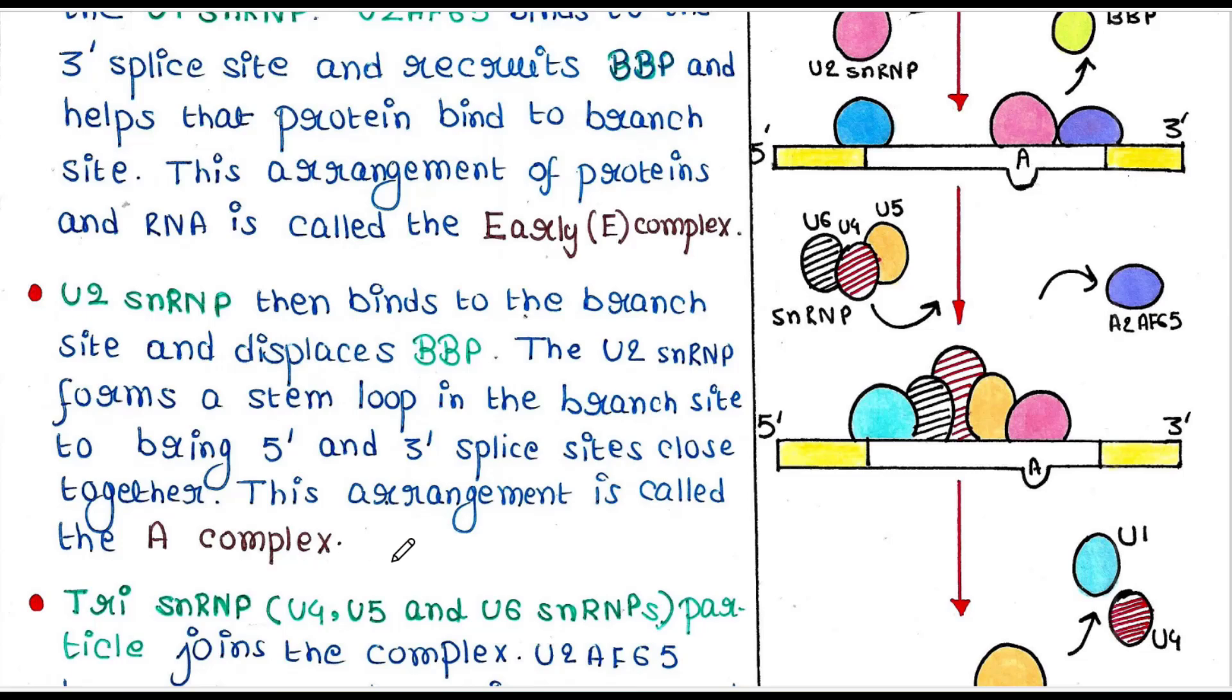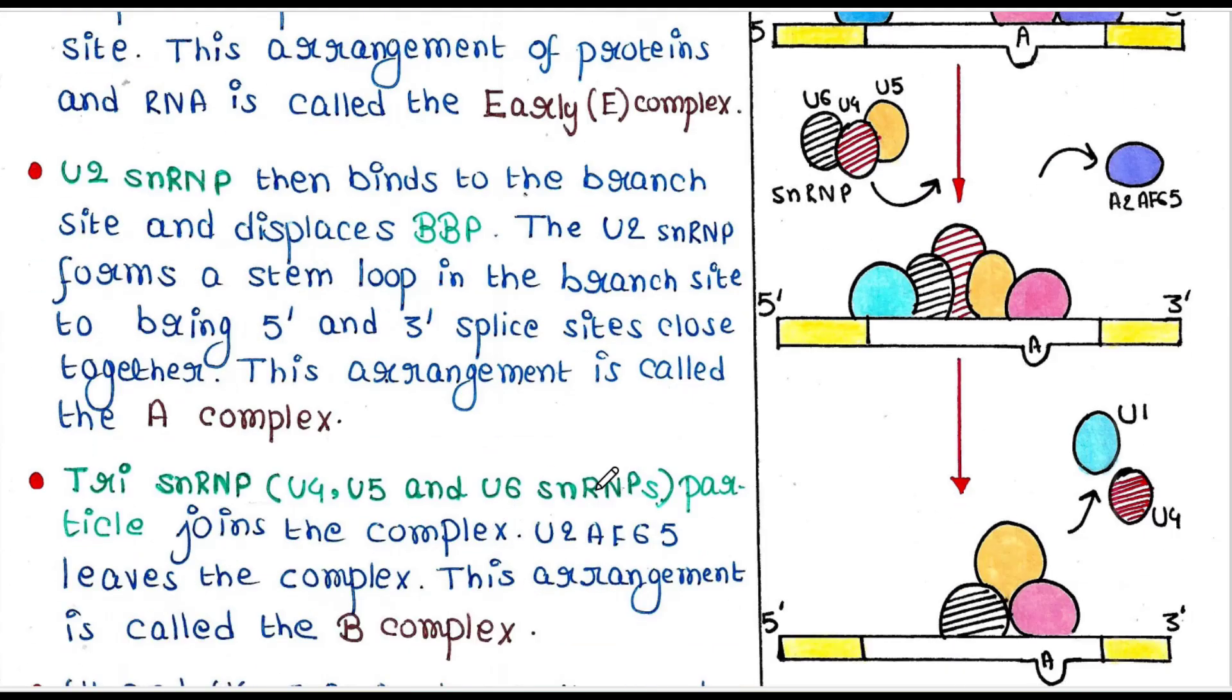Tri-snRNP basically contains three molecules: U4, U5, and U6 snRNPs. They all together join the complex and U2AF65 leaves the complex. This arrangement is now called the B complex.